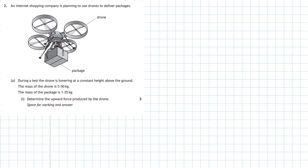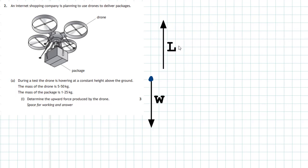The first thing we do is represent the drone and the package by a dot — a large dot. Then we put in vectors, which are arrows showing the forces acting on the drone and the package. The first force is acting downwards, and that's the weight — the combined weight of the package and the drone. The big clue is that it's hovering at a constant height, so it's not moving, meaning there's no unbalanced force acting on it.